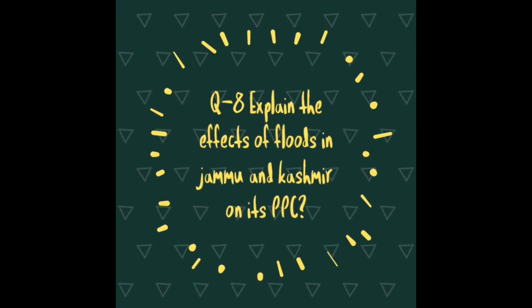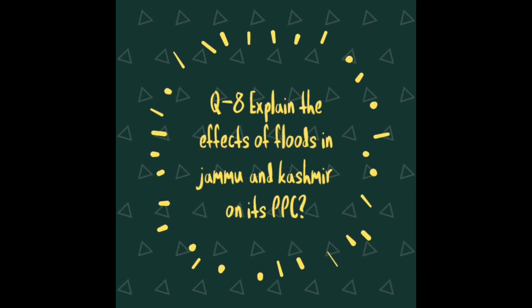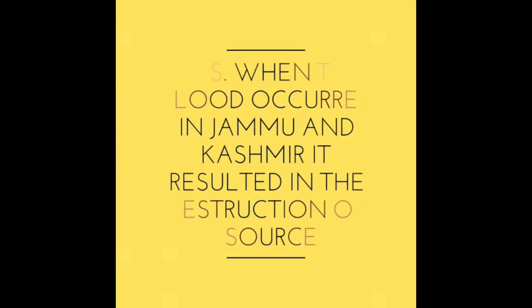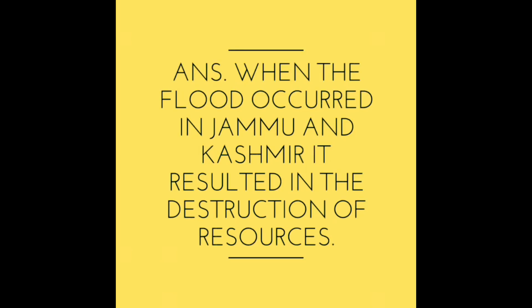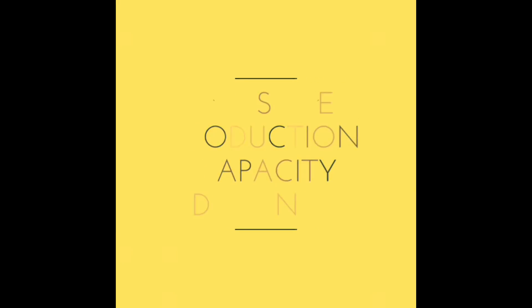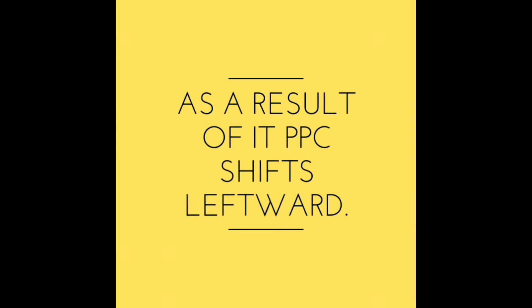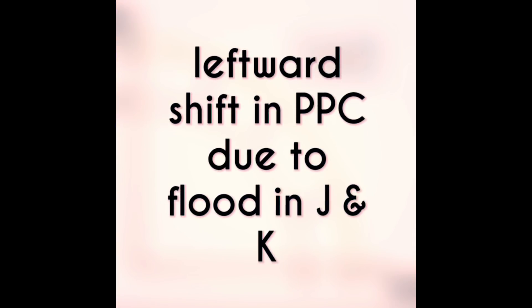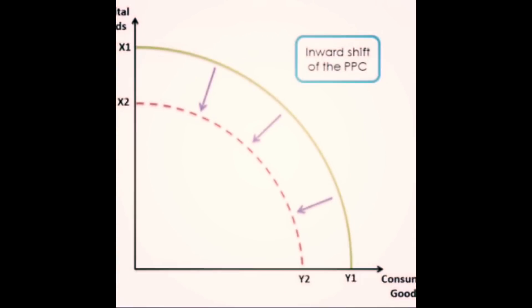Question number eight: explain the effects of floods in Jammu and Kashmir on its PPC. When the flood occurred in Jammu and Kashmir, it resulted in the destruction of resources. Thus the production capacity declined. As a result, the PPC shifts leftward. The leftward shift in PPC due to the flood in Jammu and Kashmir is shown in this diagram.